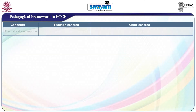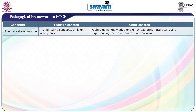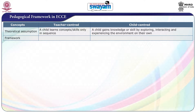The first concept is on the theoretical assumption. The teacher-centered approach assumes that a child learns concepts or skills only in sequence. Whereas, the child-centric approach assumes that a child gains knowledge or skill by exploring, interacting, and experiencing the environment on their own. With reference to the framework, the teacher-centric uses a structured framework, whereas the child-centric takes up an open framework.